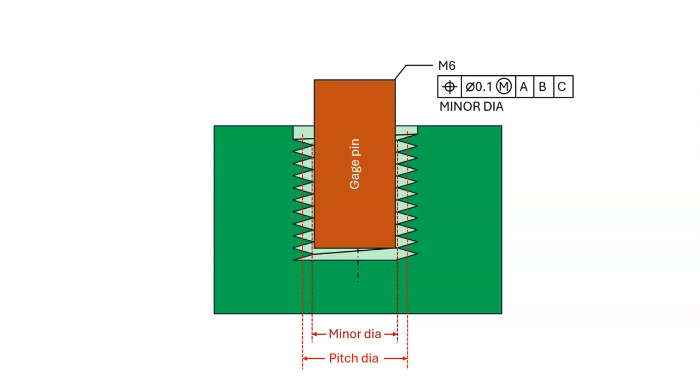Second, the MMC modifier introduces bonus tolerance. The bonus tolerance will be based on the size variation of the minor diameter. You must do the appropriate tolerance stack to make sure your design can tolerate this bonus tolerance.